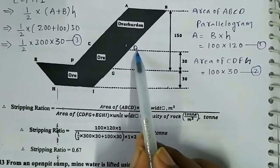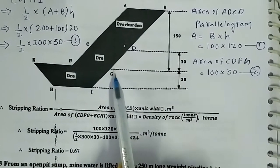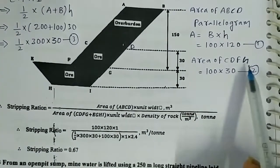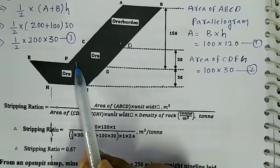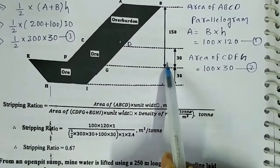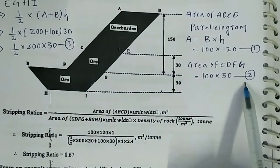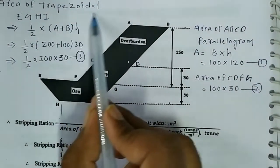Here the area of CDFG is area equals base into height. Here the base is 100 meters and the height is 30 meters. This is the second equation.